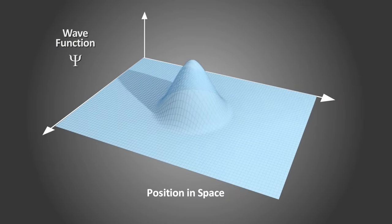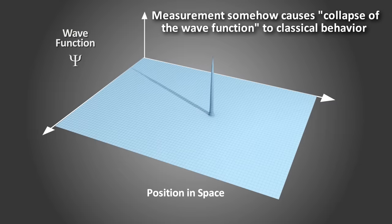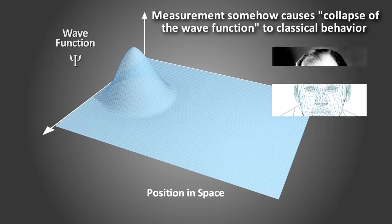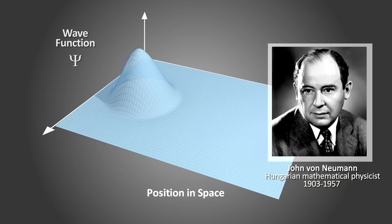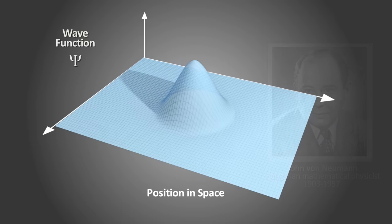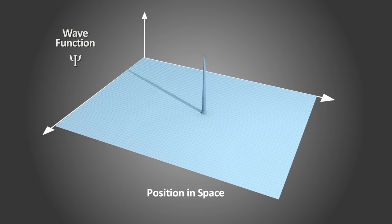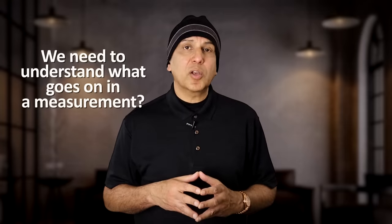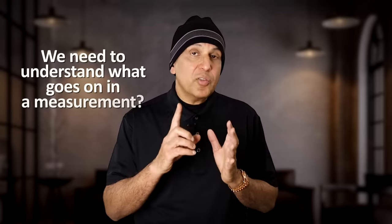This is often called the collapse of the wave function, and was first introduced by the Hungarian mathematical physicist John von Neumann in the early 1930s. But it's just a kind of botch for conjuring the classical world of this and that from the quantum world of everything-at-once probabilities. This is just not satisfying. In the past several decades though, quantum researchers have realized that what we really need to do to understand this thing we've called collapse of the wave function is to think more carefully about what goes on in a measurement.